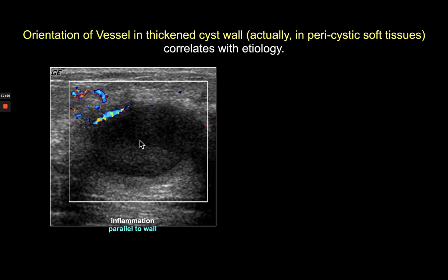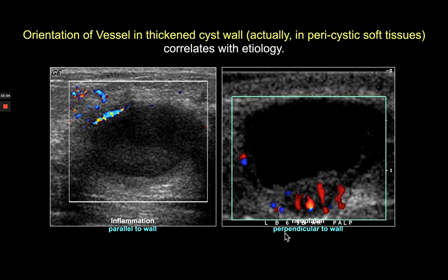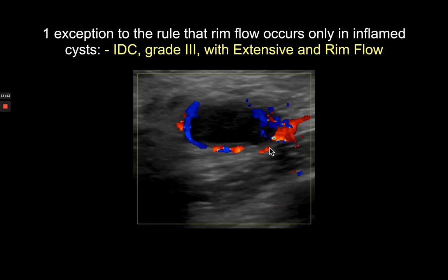In contrast, vascularity supplying an intracystic papillary lesion like papilloma or carcinoma is usually oriented perpendicular to the cyst wall, passing through it. The orientation of the vessel can be very helpful. A caveat: a triple-negative grade 3 invasive ductal cancer with extensive hemorrhagic necrosis can show only vessels in the apparent pericystic area because the interior has liquefied — a potential false negative mimicking an inflamed cyst, though this is uncommon.